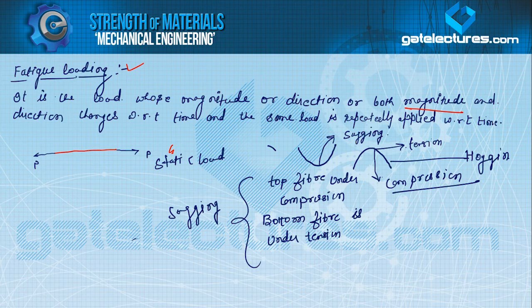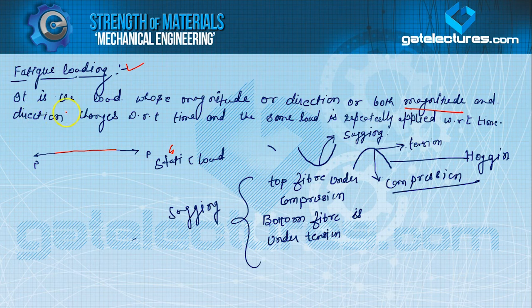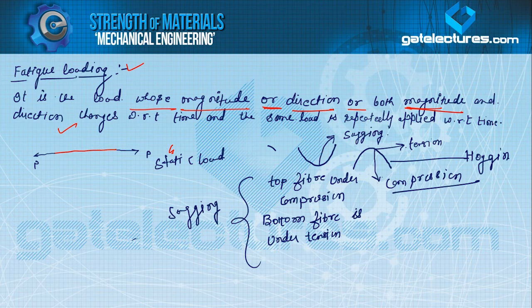This is called fatigue loading. Looking at the definition again: it is the load whose magnitude or direction, or both magnitude and direction, changes with respect to time. In this wire bending example, only the direction is changing. If we also vary the load magnitude in sagging and hogging conditions, then both magnitude and direction change. For example, consider a shaft with a pulley mounted on it.